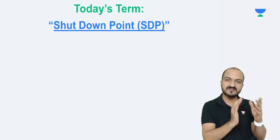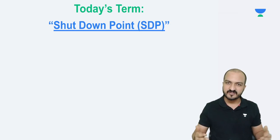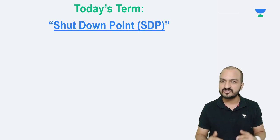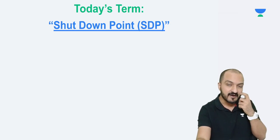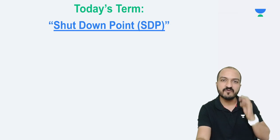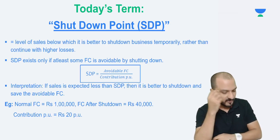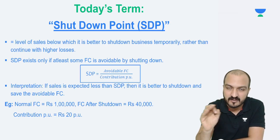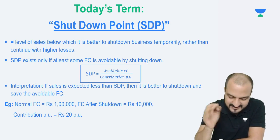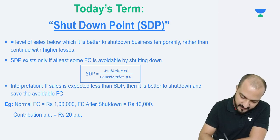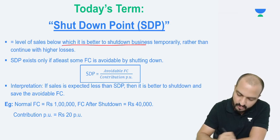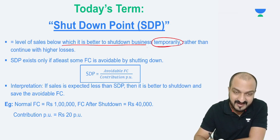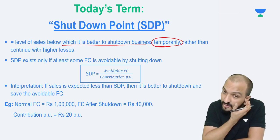What exactly is a shutdown point? This is used at many places in costing — it is a general tool in many calculations of costing, mostly as part of CVP analysis. Shutdown point is a level of sale below which it is better to shut down my business temporarily, rather than continue with higher losses.